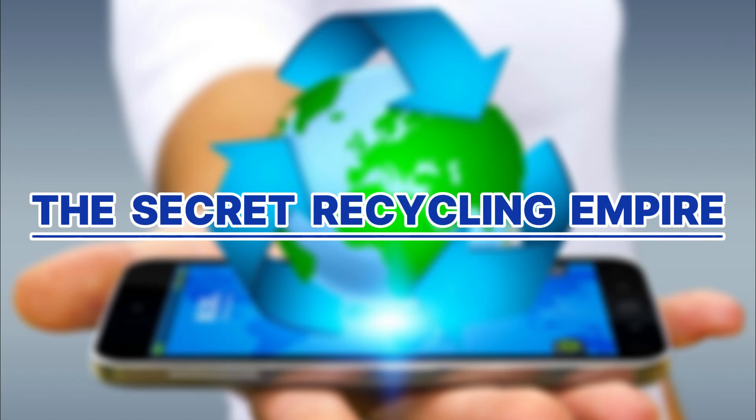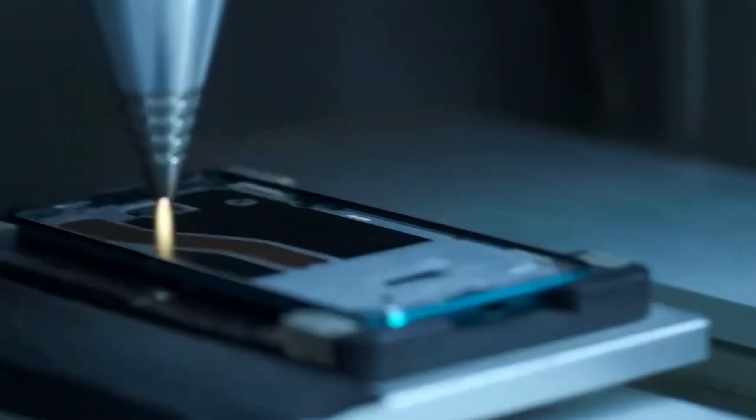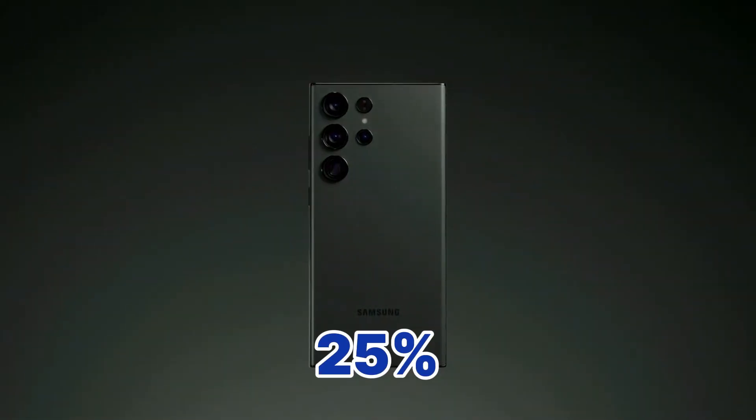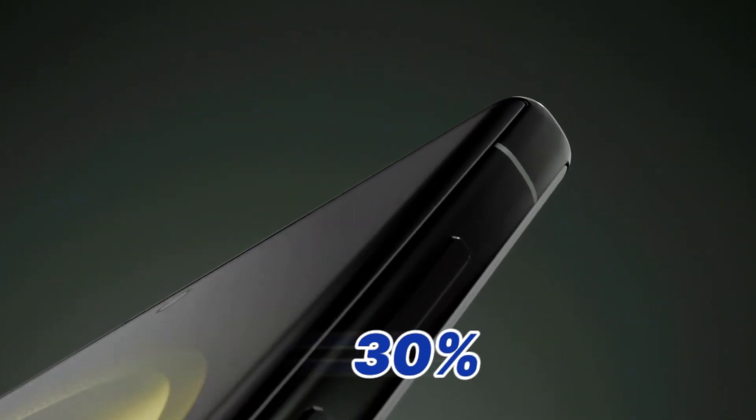Here's something Samsung doesn't advertise much, but it's absolutely genius. Up to 25% of the glass in your Galaxy S23 Ultra is recycled. The aluminum in your volume buttons and SIM tray? 30% recycled. Samsung has built an entire circular economy, where old phones literally become new phones.